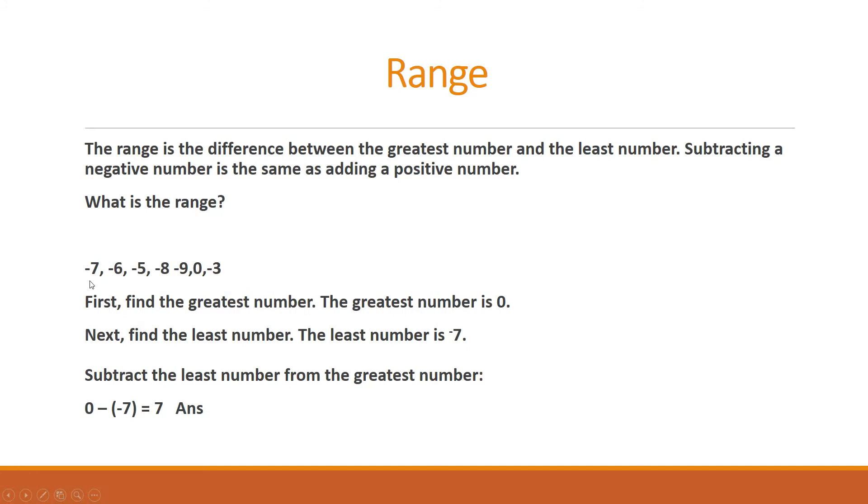Suppose if we have these numbers minus 7, minus 6, minus 5 and so on. First find the greatest number, and the greatest number is 0 because all are negative. Next find the least number. The least number is minus 7. Then we have to subtract the least number from the greatest number: 0 minus minus 7 which equals 7. So 7 is the range.